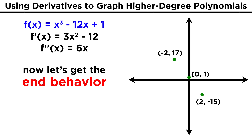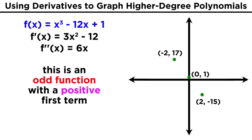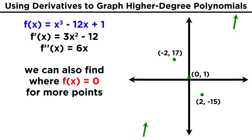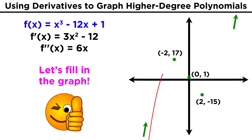We are just about ready to sketch this function. This is a cubic function with a positive first term, so it necessarily rises from negative infinity and extends to positive infinity. Starting all the way down, we rise up to the first point at (−2, 17), which is a local maximum, then curve back down. We pass through the inflection point at (0, 1), changing from concave down to concave up, and eventually reach the local minimum at (2, −15). Then we curve back up and extend to positive infinity. That's how we use derivatives to graph this function.